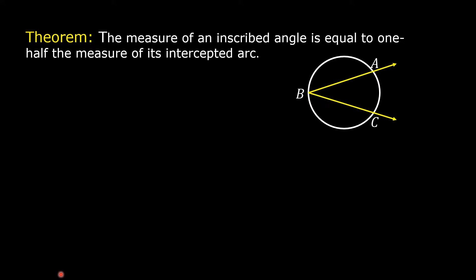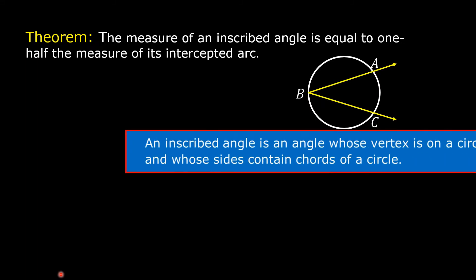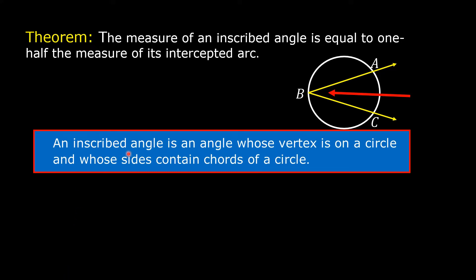Let us take a look at this illustration. An inscribed angle is an angle whose vertex is on a circle and whose sides contain chords of a circle.